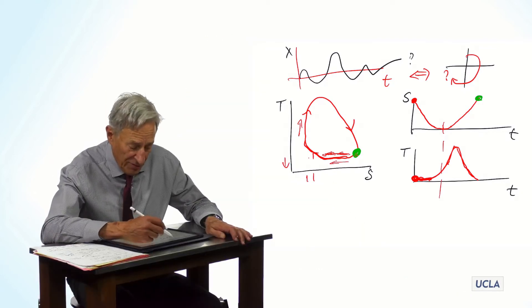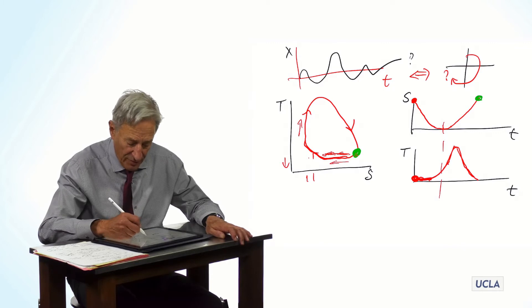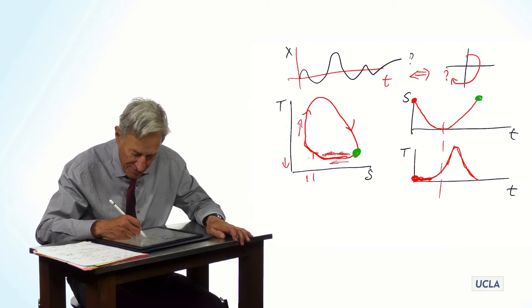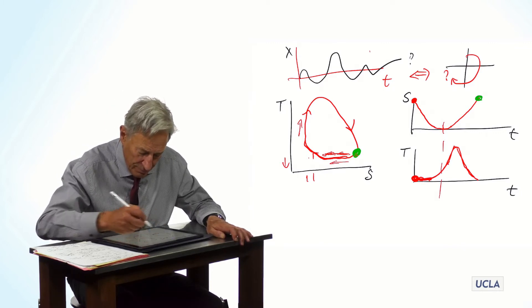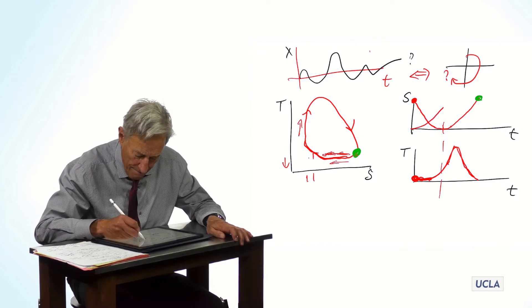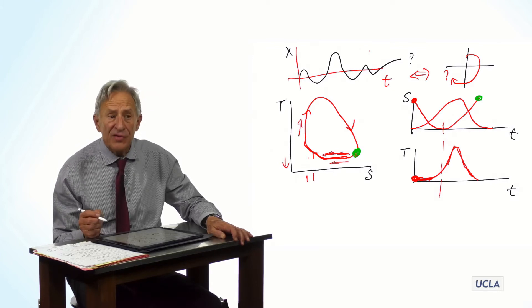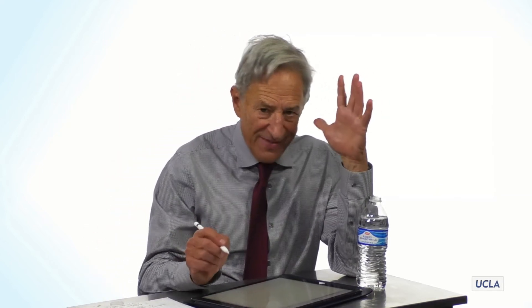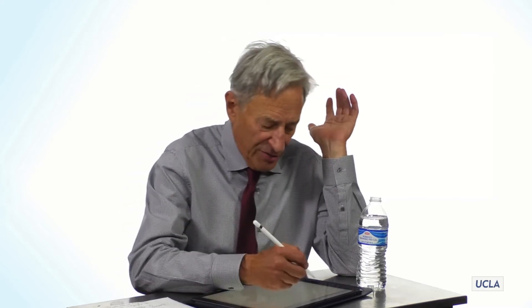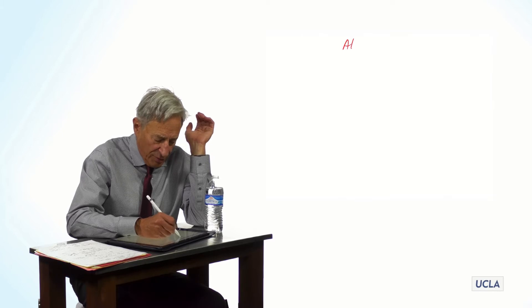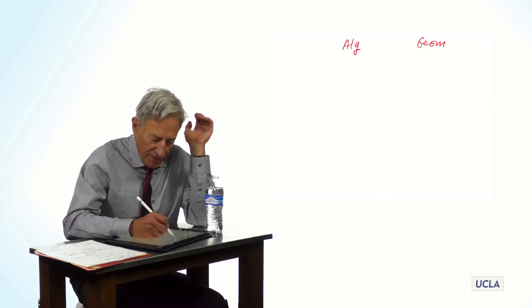If we wrote them both on the same graph, they would look like this. And you see that they are out of phase with each other. So what have we done? Well, we have laid out a very basic set of machinery. And again, to put it in the algebra and the geometry...